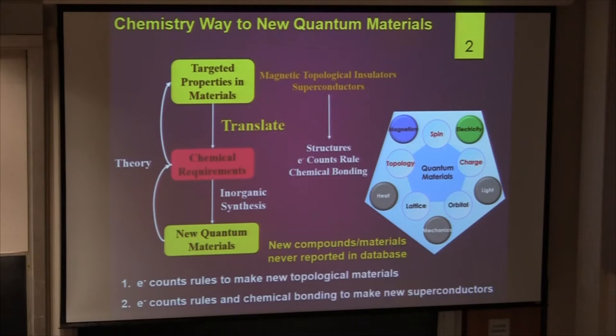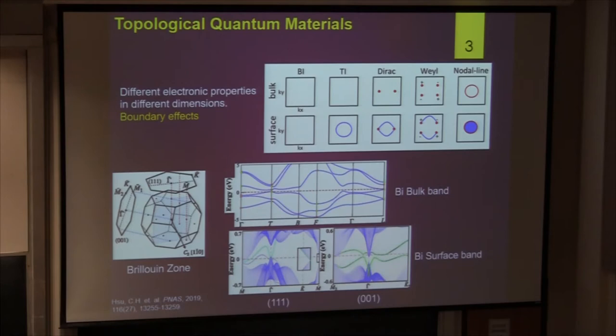Today I'm going to talk about two materials: one is a topological material, one is a new superconductor. We use chemistry intuition — electron counting rules — to count the electrons and make the new material. Let's start from the topological material. It's more straightforward, and for chemistry it's simple to make.